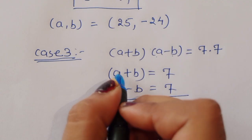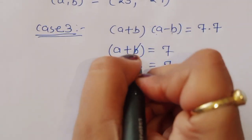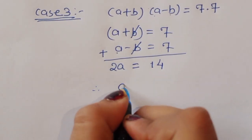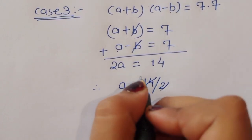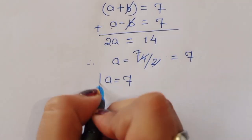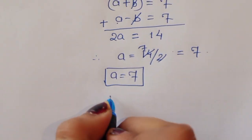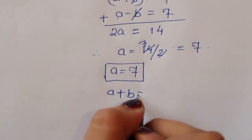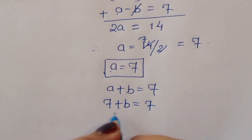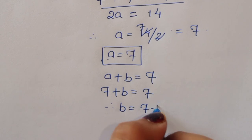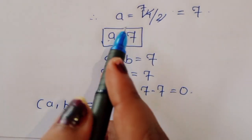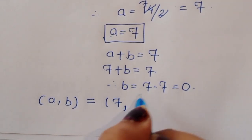Continuing Case 3: substituting a = 7 into a + b = 7 gives b = 0. So in Case 3, a = 7 and b = 0.